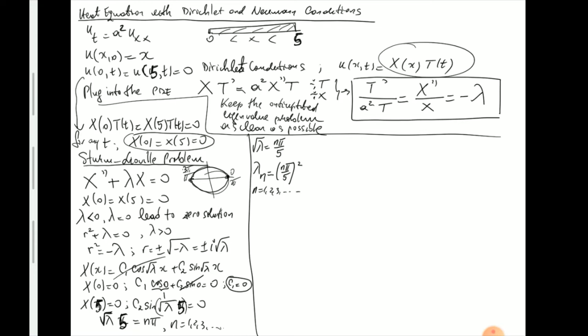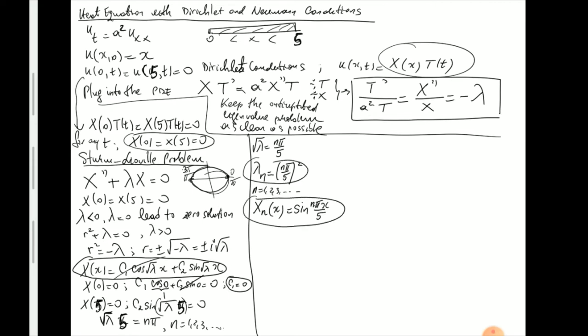So we found our eigenvalues, and of course the corresponding eigenfunctions. The eigenfunction is essentially the solution X_n(x) — disregarding the constant, because the constant will be assembled later when we do the superposition — which is sin(nπx/5). You might already see that this may lead to a sine series representation on the interval [0, 5].